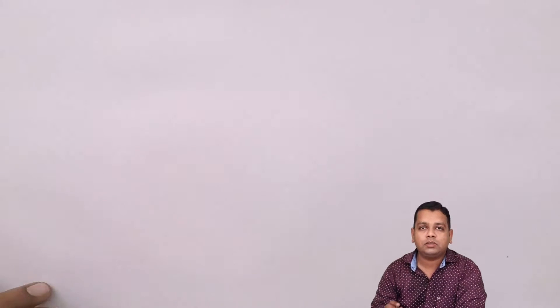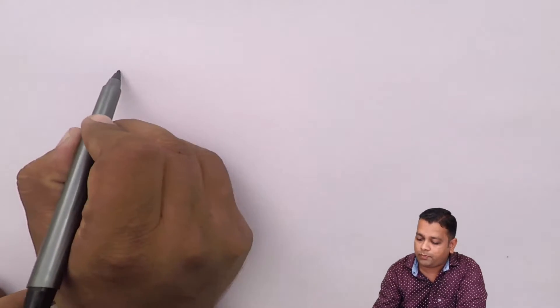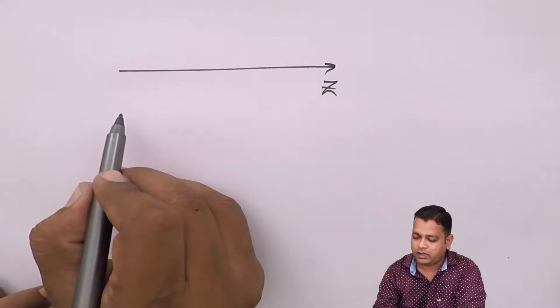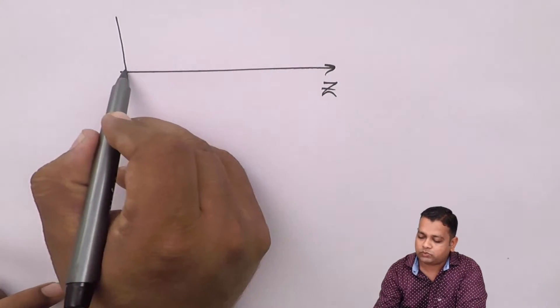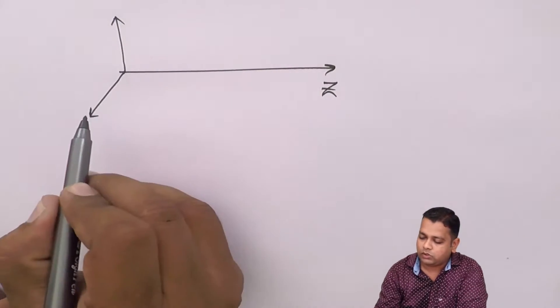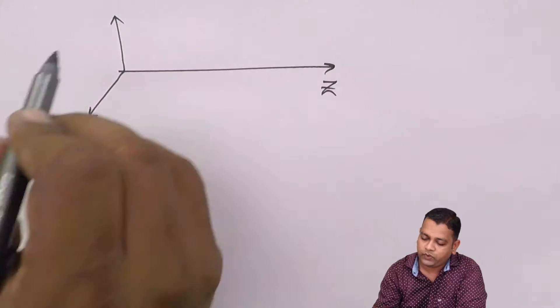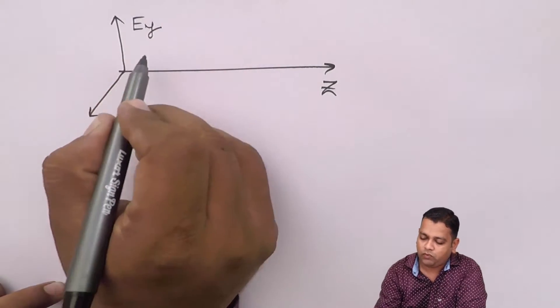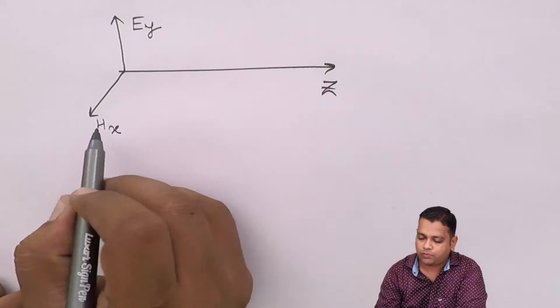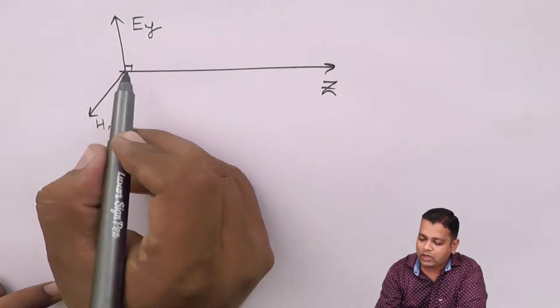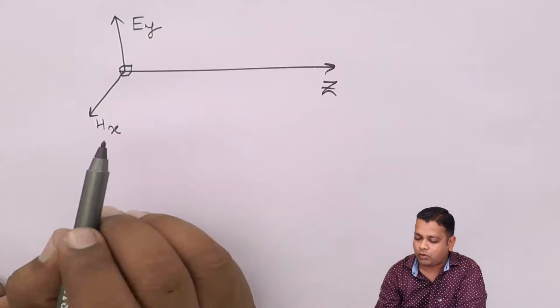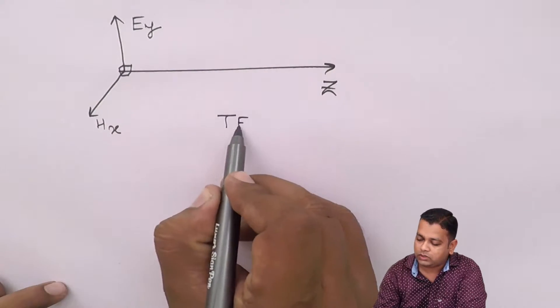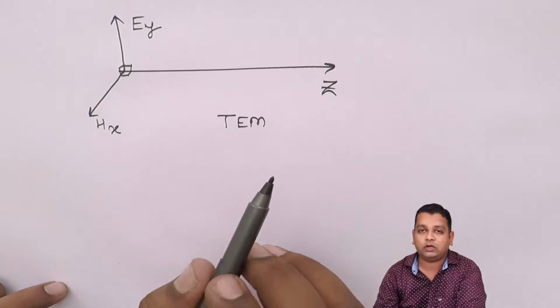Addressing such problems requires formulating a coordinate system that works in all three dimensions. Initially, we have taken the direction of propagation to be the Z direction, and the E and H components of the electromagnetic wave were also perpendicular to the direction of propagation — selecting the electric field with the Y component and the magnetic field with the X component. They are mutually perpendicular as well as perpendicular to the direction of propagation. This wave model is termed the TEM wave model, or transverse electromagnetic wave model.